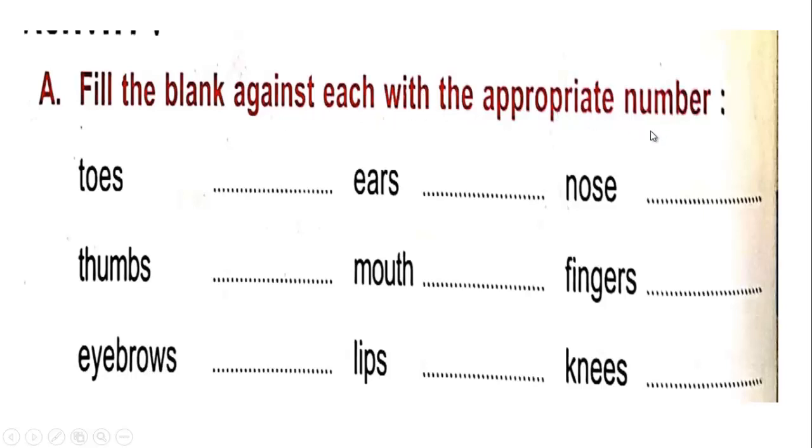Toes, how many toes we have? 2. How many thumbs we have? 2. How many eyebrows we have? 2. How many ears we have? 1, no no, we have 2 ears. How many mouth we have? 1 mouth.